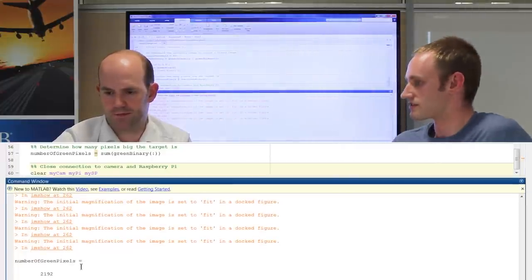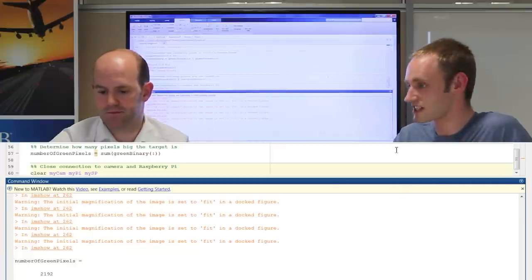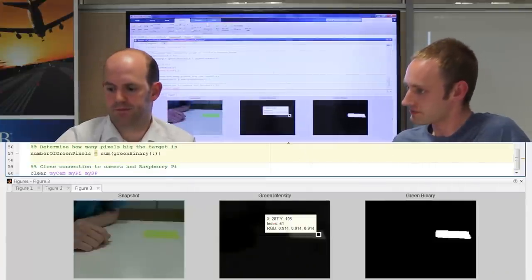So you've got 2,192 pixels. So that tells you the target's reasonably close. OK. And you can do all kinds of things like that. OK.